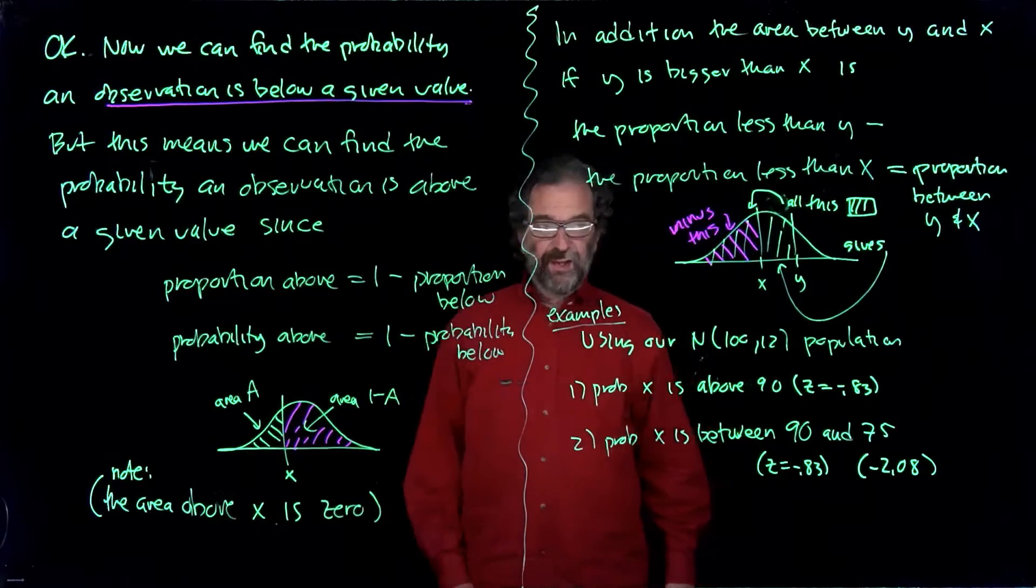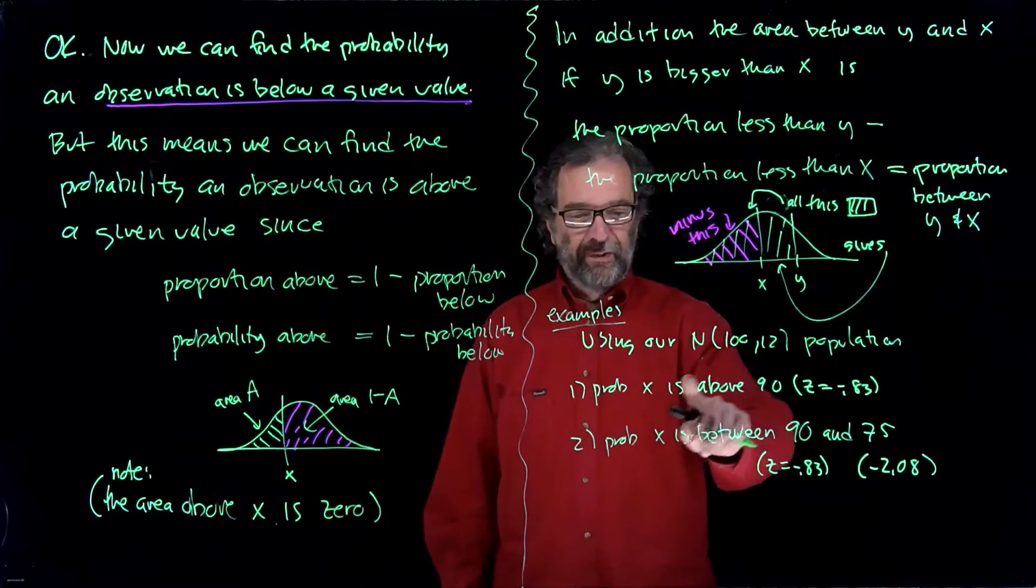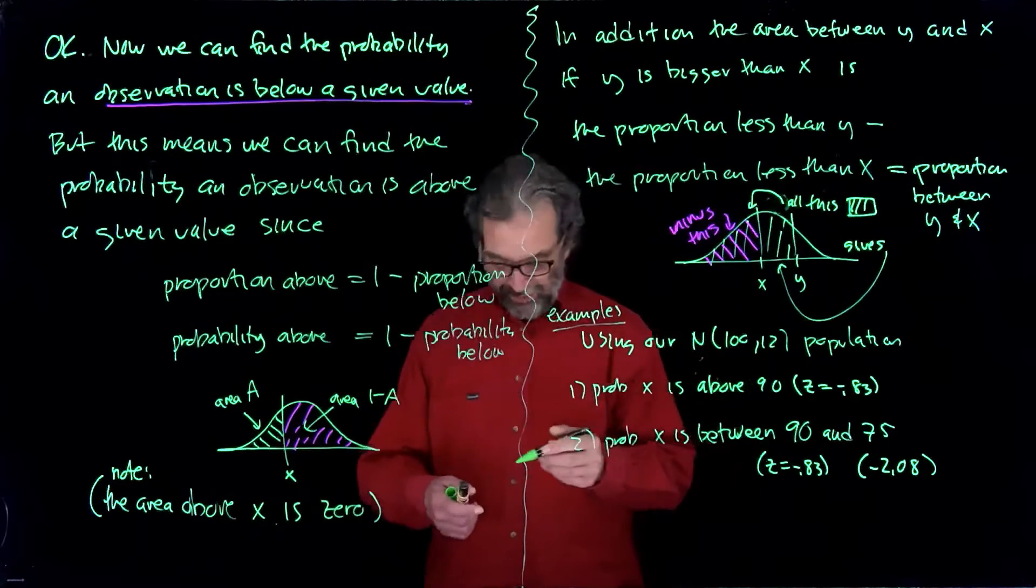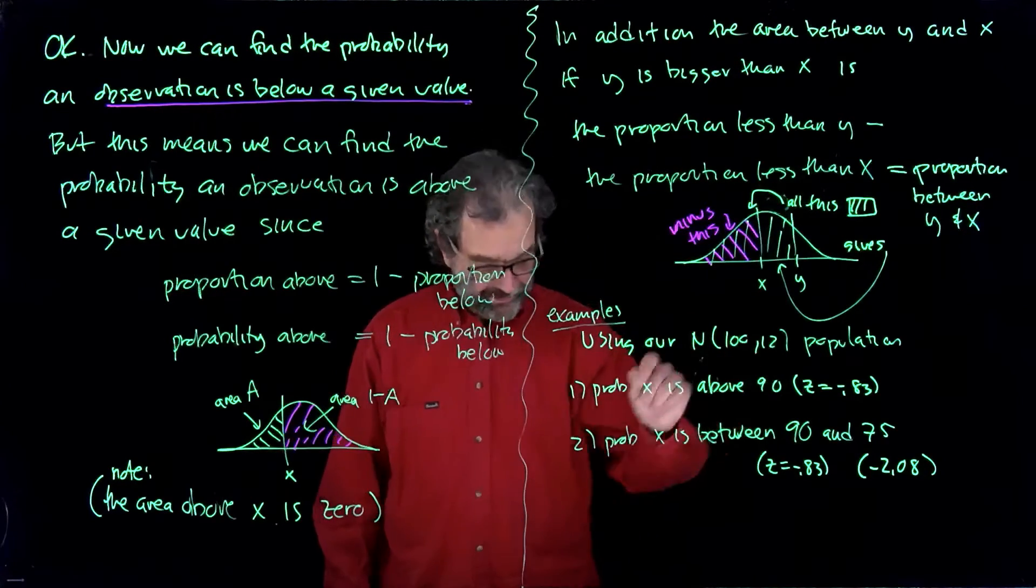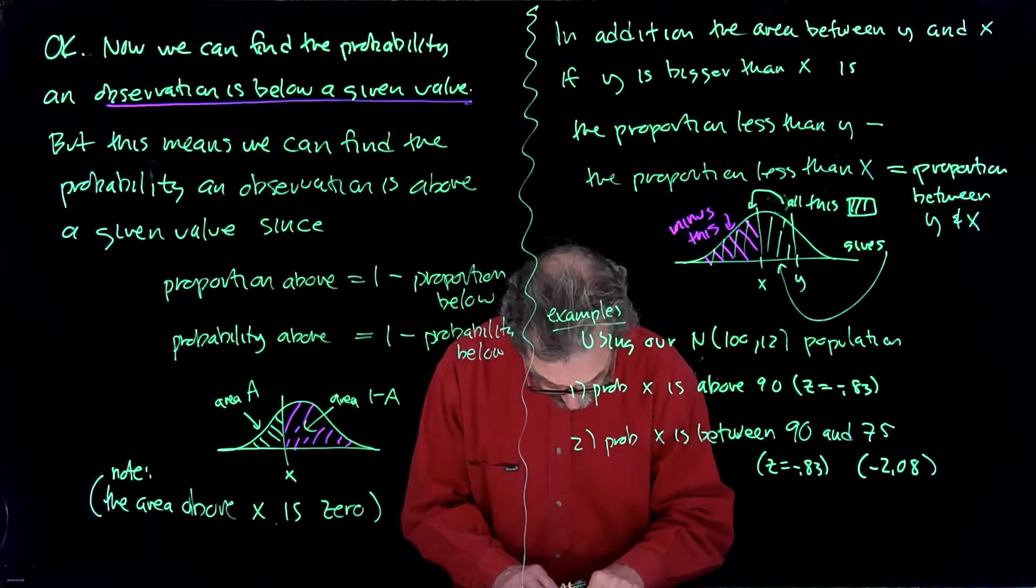So we'll try those two things using our normal mean 100, standard deviation of 12. What's the probability that x is above 90? So we already did that, but I'm just going to use the z values just for fun. So I'm going to look up minus .83, which we did.